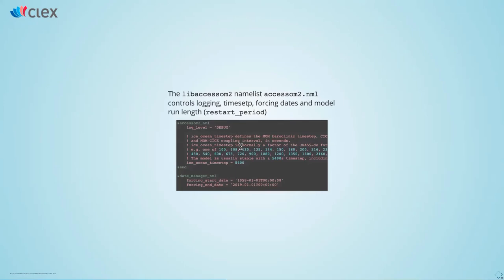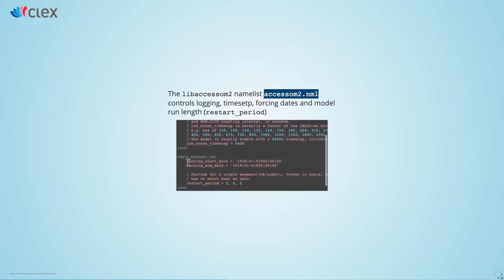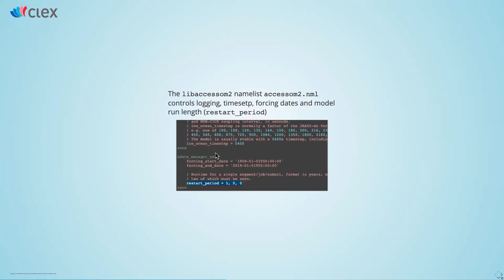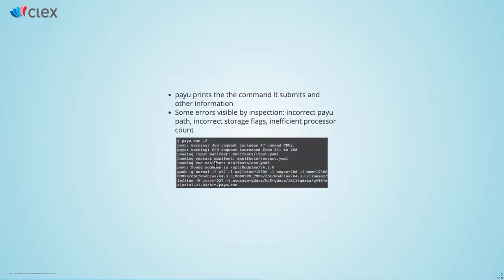The libaccess-OM2 namelist file accessom2.nml controls the logging, times, model time step, forcing dates, and restart period — that is, how long the model runs. That's the file you're most likely to change if you want to alter how long the model runs or change the time step. If you want to run the model as a test, you can change the runtime from five years to one month by changing the restart period in accessom2.nml, then do PayU run and the model will just run — as long as you are a member of the appropriate groups.